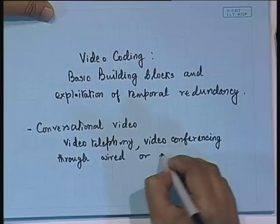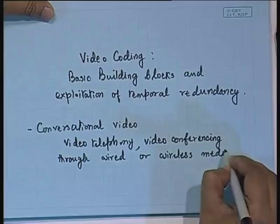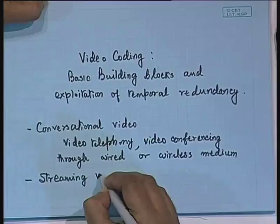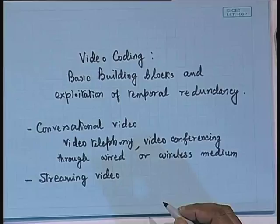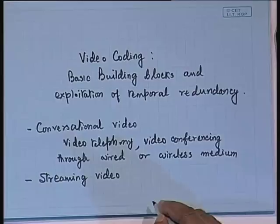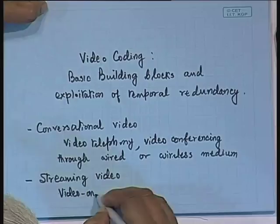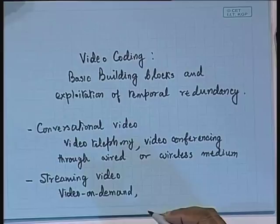The other major application domain is streaming video — like this video which you are watching through the net — where you are able to download it into your terminal and watch it as video on demand. Video on demand is one of the major applications of streaming video, where some recorded video in digital medium is stored and you can just get that video stream and play it on your system.